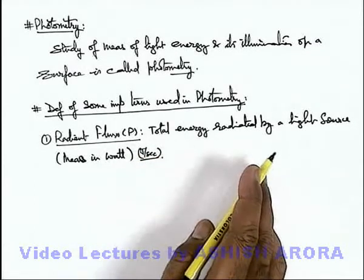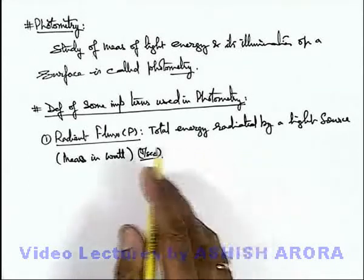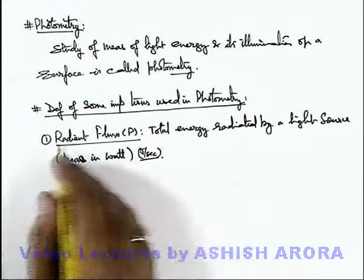That is total amount of energy which is radiated by a light source. It may be in form of light, thermal radiations, ultraviolet radiations and all. So this is the total energy.